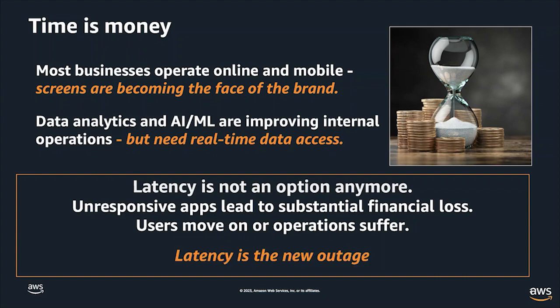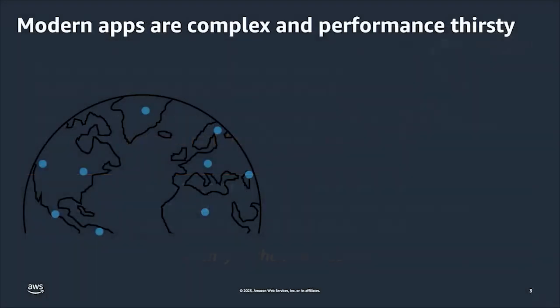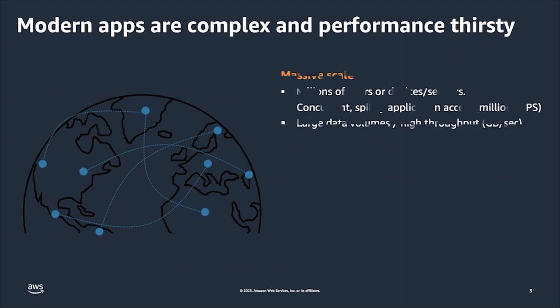All this translates into: latency is not an option anymore — it's becoming a hard SLA. Unresponsive applications lead to substantial financial loss, often to the tune of millions of dollars in a matter of seconds. Users move on, or operations suffer. Latency is indeed the new outage. Yet at the same time, applications need very low latency and are growing in complexity — they're global, at massive scale, with millions of users, devices, or sensors, needing millions of requests per second and very large data volumes at terabyte and even petabyte class, pushing demand for very high throughput.